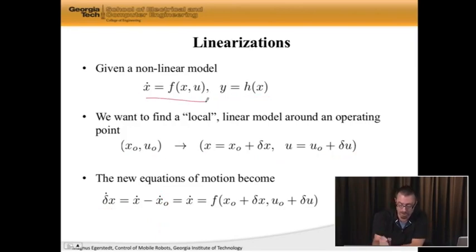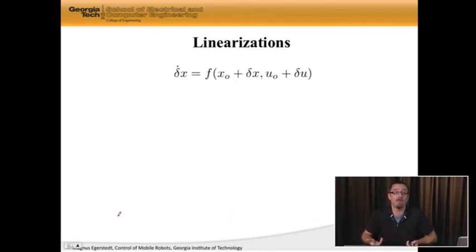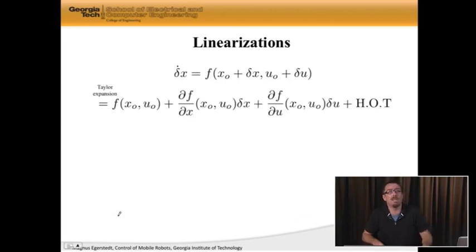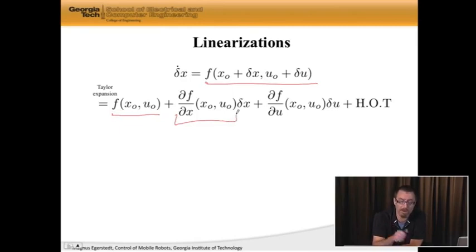Let's see if we can somehow simplify this. So this is my model. Now, luckily for me, there's something known as a Taylor expansion that allows me to write this on a simpler form. So this thing can be written as f evaluated at the operating point plus this partial derivative of f with respect to x also evaluated at the operating point. This is known as the Jacobian. And then you have the same partial derivative, but now with respect to u evaluated at the operating point. And we multiply this with delta u here and delta x here.